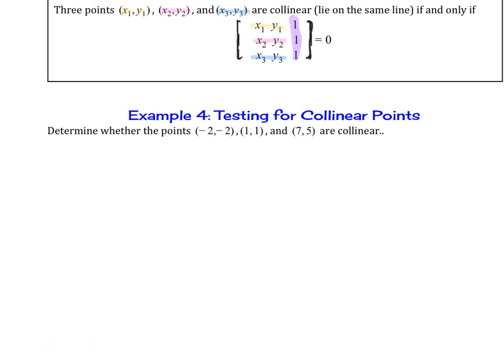So let's plug in these values. So we have negative 2, negative 2, 1, 1, 7, 5, and then this is all 1s here. And then you use whatever method you would like.